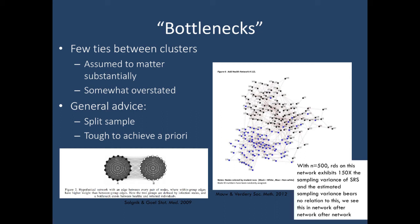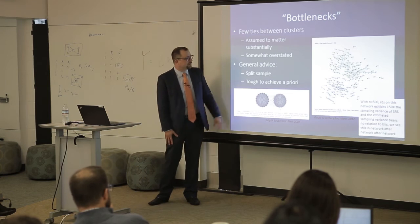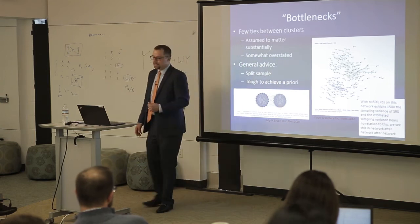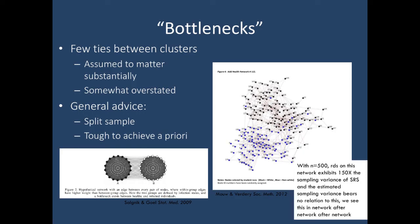Bottlenecks lead to inflation of sampling variance. In one AddHealth network that doesn't have a large bottleneck structure, if you simulate RDS samples with a sample size of 500, that network has over 150 times the sampling variance of what you would get from simple random sampling 500 people. So these bottlenecks can lead to huge problems.